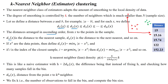d1(x) is the distance to the nearest sample, and d2(x) is the distance to the next nearest sample. We calculate like that until all data points are covered. If xt are the data points, then d1(x) is defined as the minimum distance between x and xt.